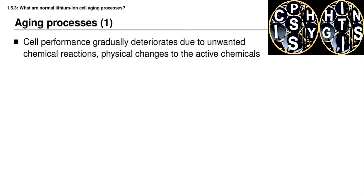Lithium-ion cell performance generally deteriorates gradually over time due to unwanted chemical reactions that happen inside the cell, and also due to physical changes to the active materials in the cell. We already know about the desired chemical reaction where lithium exits one electrode and enters into the electrolyte and then into the other electrode, and vice versa when charging and discharging the cell. However, there are other chemical reactions that happen inside this cell that we do not desire to happen.